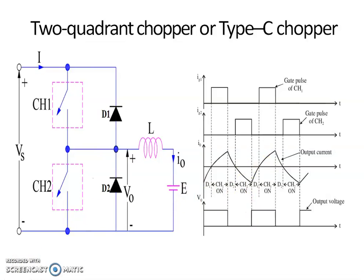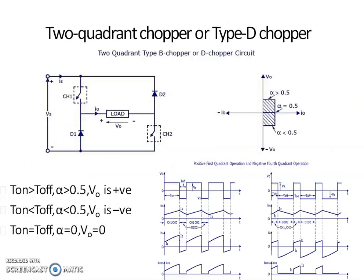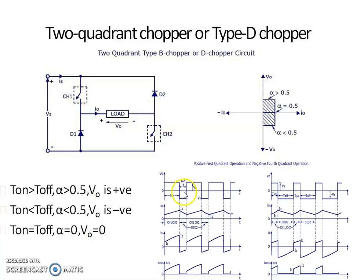Next we will discuss the working of a Type D chopper. The power circuit consists of two switches CH1 and CH2, and two diodes D1 and D2. The output voltage V0 equals Vs when both switches CH1 and CH2 are on. The output voltage equals minus Vs when both chopper switches CH1 and CH2 are off but both diodes D1 and D2 conduct. The average output voltage V0 is positive when the chopper turn-on time is more than the turn-off time. The direction of load current is always positive because the choppers and diodes can conduct current only in the direction of the arrows shown in the figure.